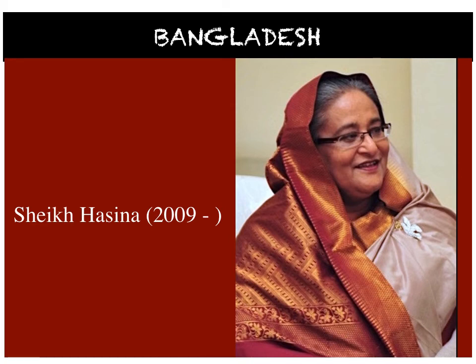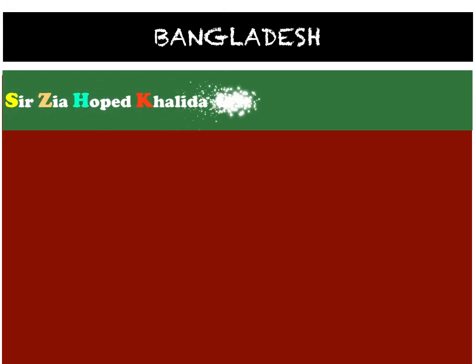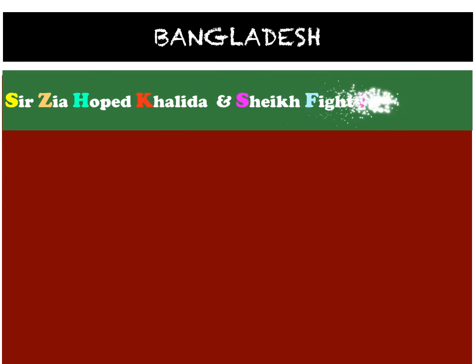For those who get confused with the order of names, here is a sentence to help remember them in order: 'Sir, Zia hoped Khalida and Sheikh fight successfully will go and by silence.'